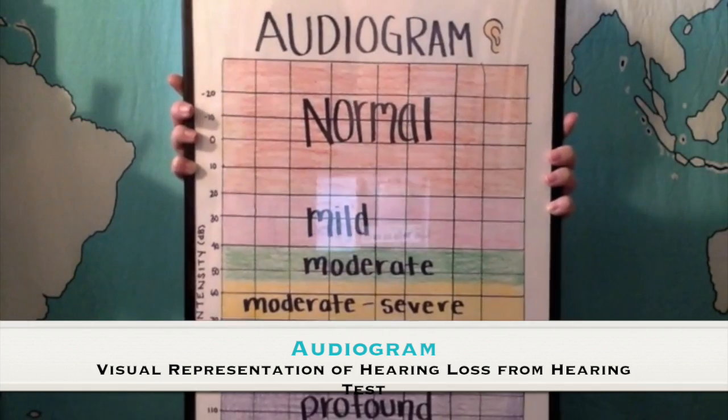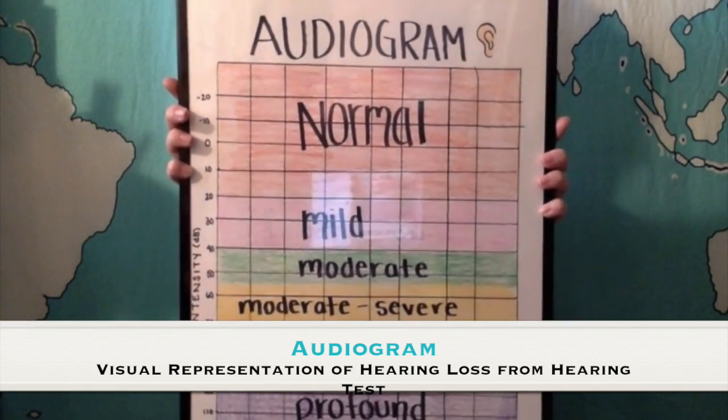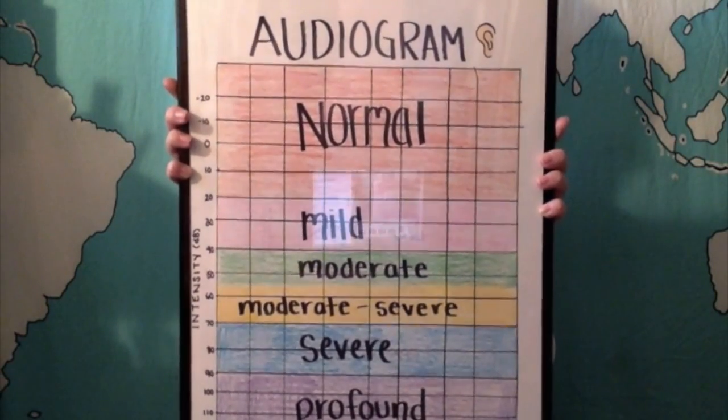Hi! So today I'm going to give you a crash course in reading an audiogram. An audiogram is a visual representation of a person's hearing loss created from a hearing test.